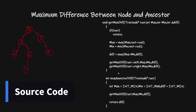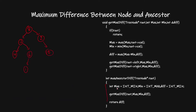Here, what I am doing is first of all I am initializing my max with the minimum integer value, my minimum with the maximum integer value, and my difference with the minimum value — because I want the maximum. After doing that, I am passing my difference by reference so that I can find my maximum difference.